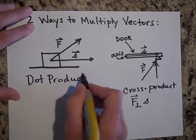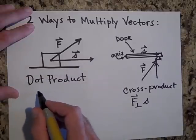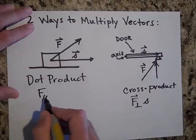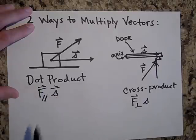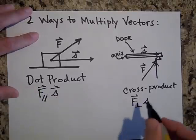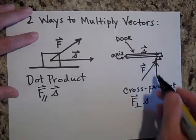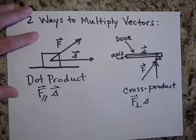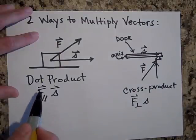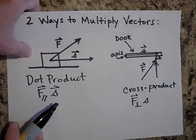So the dot product is used when the only part of the force that matters is the part that's parallel to s — that parallel component. We'll come back to the cross product later when we get into rotational motion. For right now, work has a lot to do with the dot product, so let's get into it.